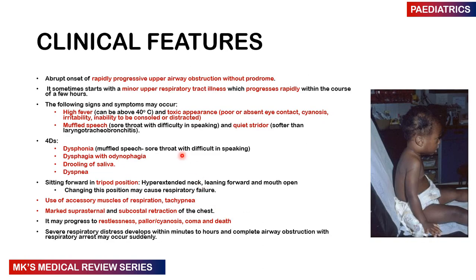Clinical features often come about abruptly with progressive airway obstruction without a prodrome. It starts with a minor upper respiratory tract illness that rapidly progresses within a few hours. Features include high fever above 40 degrees Celsius, a toxic appearance with poor or absent eye contact, cyanosis, irritability, and inability to console the child. There may be muffled speech due to a sore throat with difficulty speaking, and a quiet inspiratory stridor — much softer than what is seen in laryngotracheobronchitis.